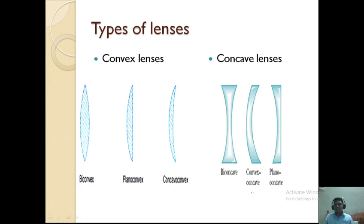Convex lenses are used in spectacles and magnifying lenses. Lenses are also used in cameras, and in optical instruments like microscopes and telescopes, where a proper combination of lenses is used to view smaller objects and distant objects.